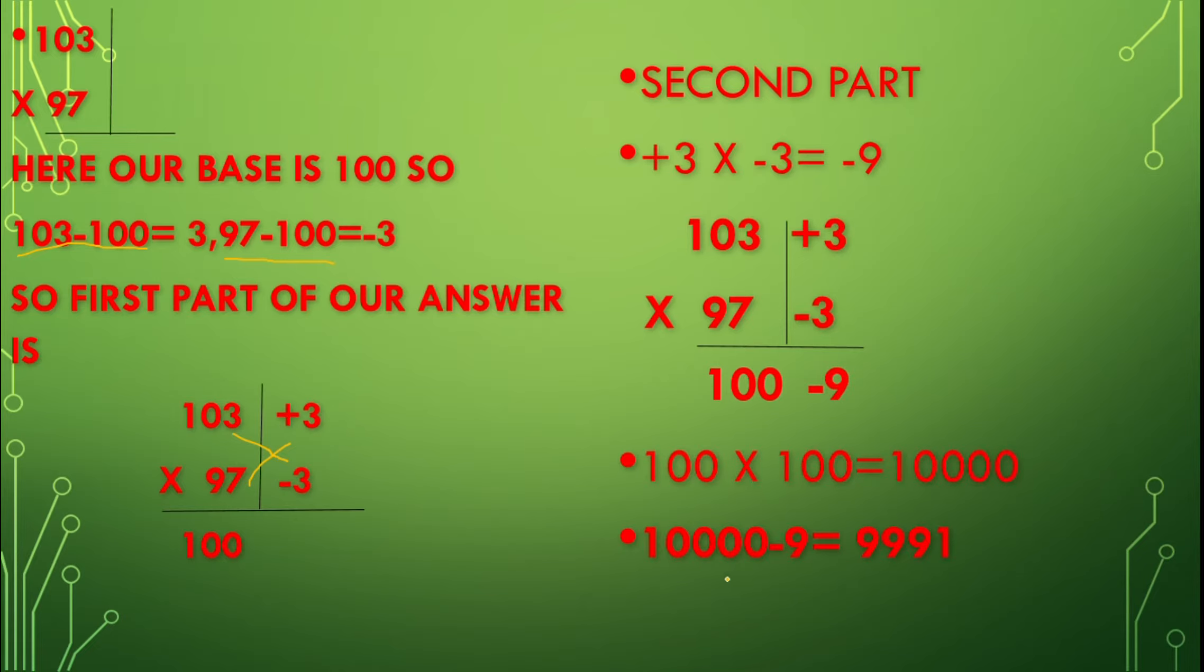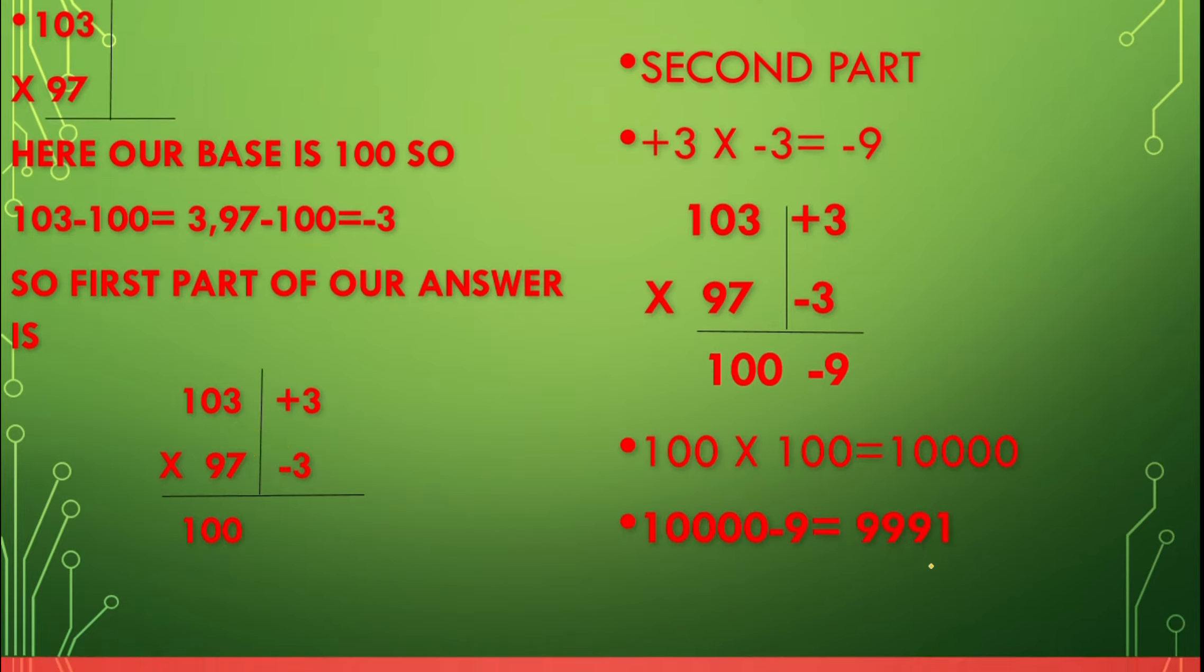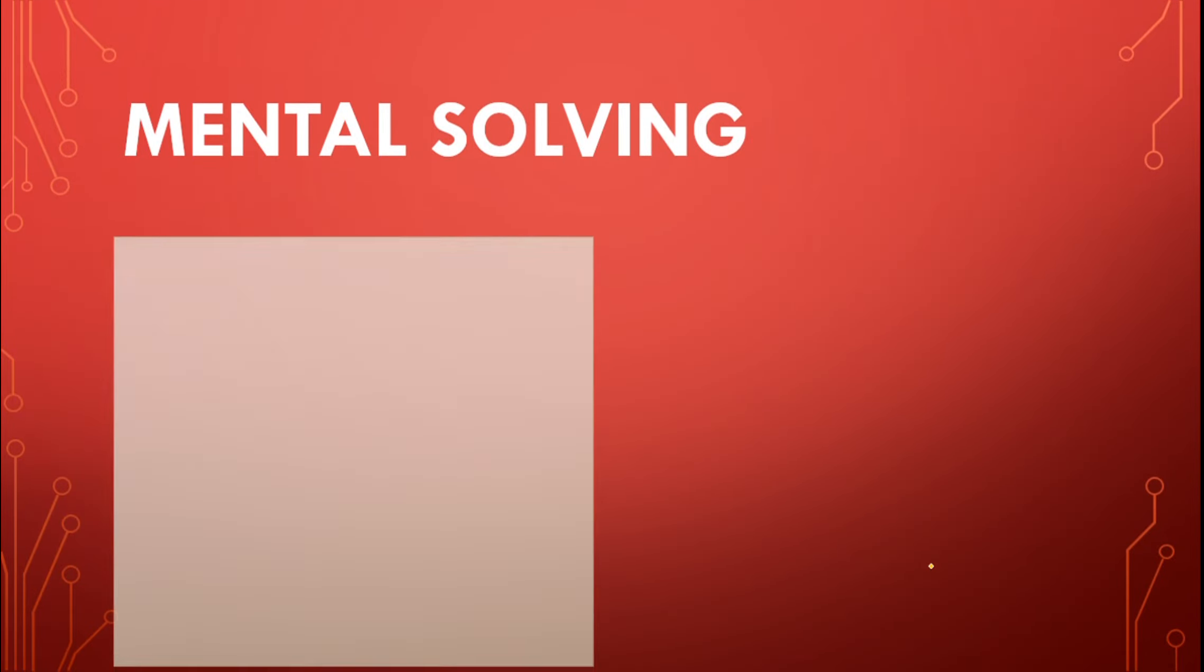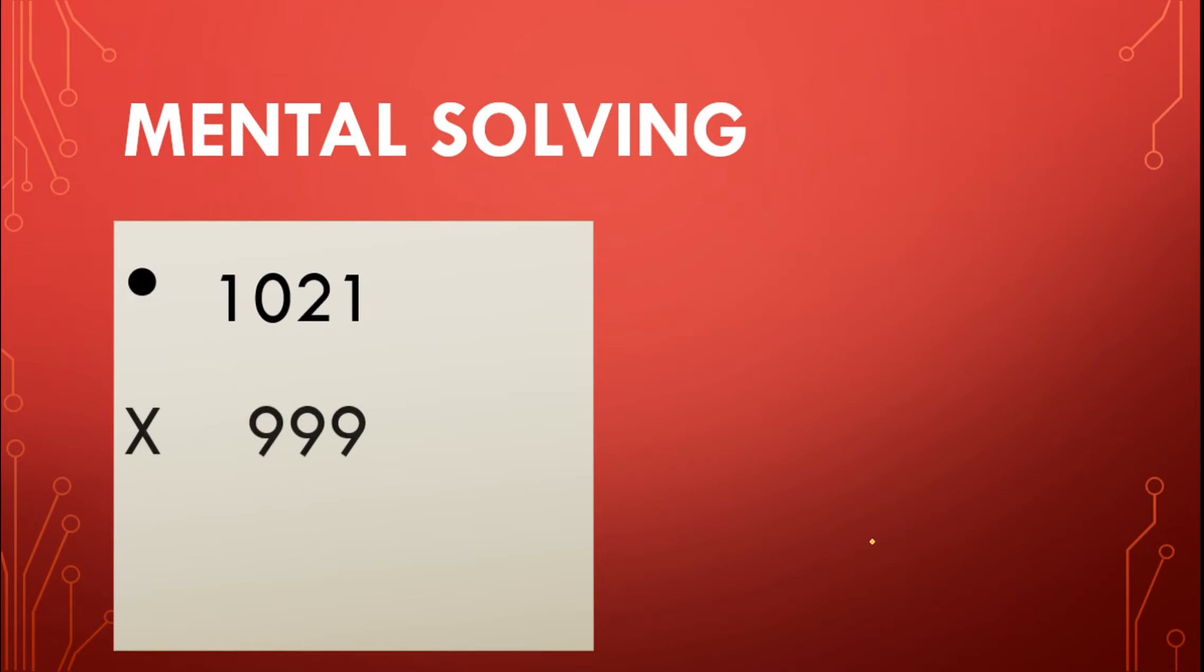Plus 3 into minus 3 equals minus 9. We could not write 100 minus 9 as the answer, so 100 into 100 equals 10,000. 10,000 minus 9 equals 9,991. Now let's do some mental solving. 1,021 into 999. The answer is 1,019,979. How? Let's see. So base is 1,000, plus 21, and here minus 1.